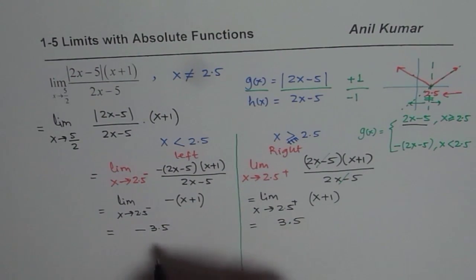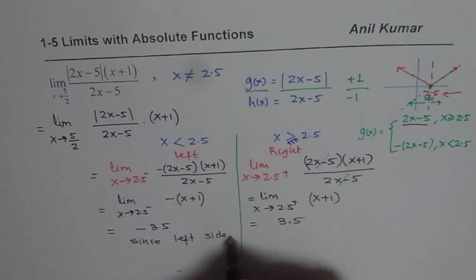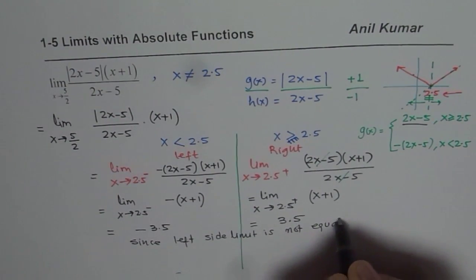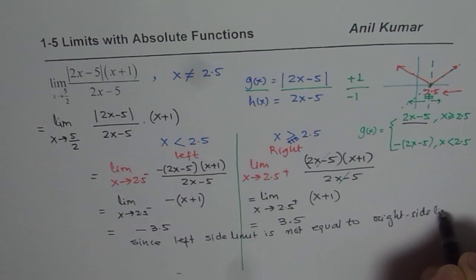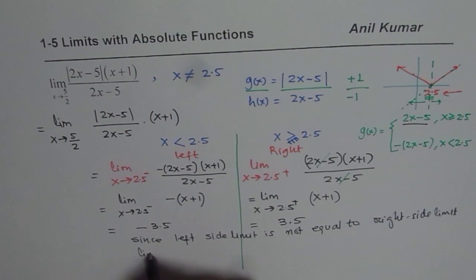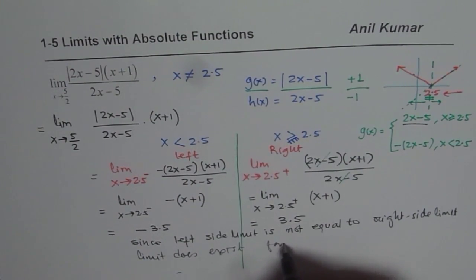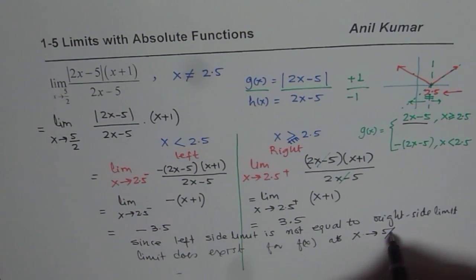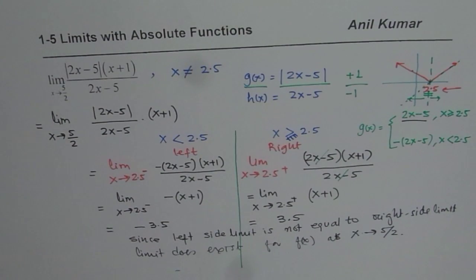Since the left-side limit is not equal to the right-side limit — negative 3.5 versus positive 3.5 — we conclude that the limit does not exist for f of x as x approaches 5 over 2.